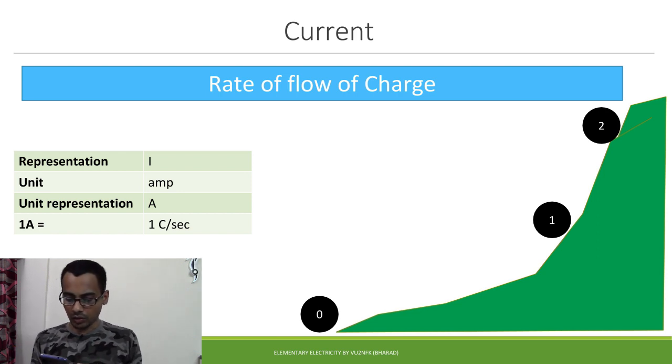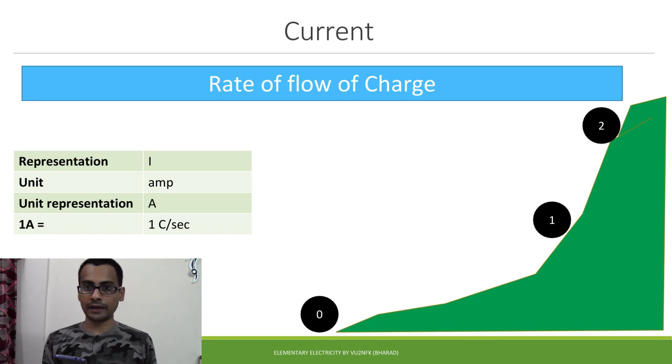So the representation for current is generally with a capital letter I and its unit is amperes and it is written as capital A. And 1 ampere is the amount of current which happens when 1 coulomb of charge flows within 1 second.